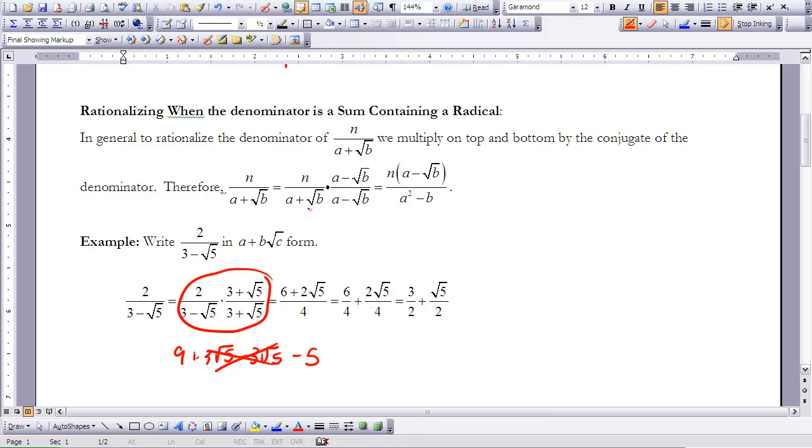So now I can break this up: 6 over 4 is a fraction, and then 2 root 5 over 4. So I can simplify this to 3 and a 2, and I can simplify this to 1 and a 2. So that leaves me with 3 over 2 plus the square root of 5 over 2.